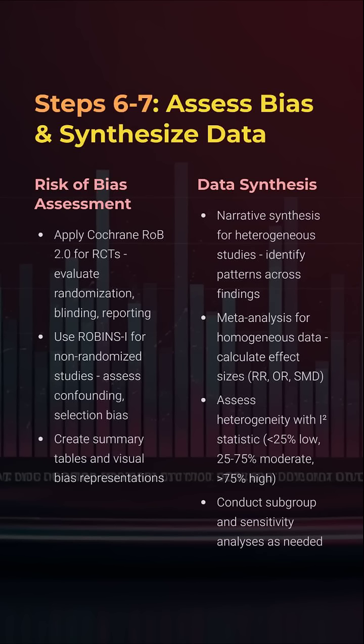Use Cochrane ROB 2.0 for RCTs. Use Robin's Eye for non-randomized studies. Show your bias tables and draw your risk graphs. Then synthesize — narrative for diverse data, meta-analysis for homogenous ones. Calculate effect sizes and assess heterogeneity with I-squared. Slice it with subgroups.